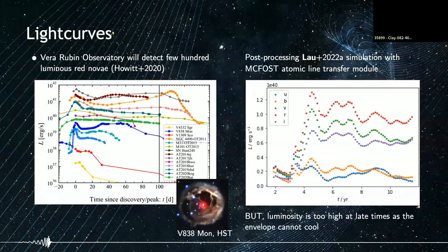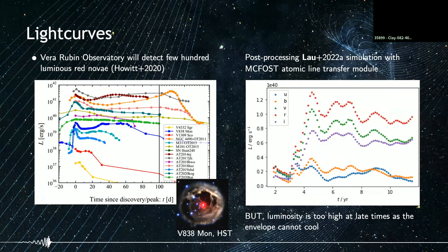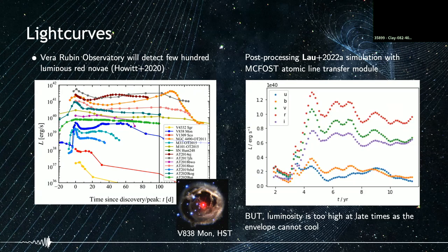Common envelopes are associated with optical transients called luminous red novae, with luminosities intermediate between supernovae and classical novae. We've post-processed our simulations with MCFAST to generate light curves, obtaining roughly the right luminosities at the beginning and at the peak. However, the luminosity is too high at late times because our common envelope is unable to cool — we have no radiative cooling.